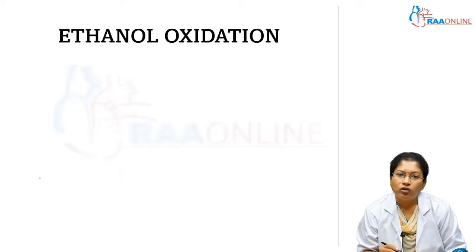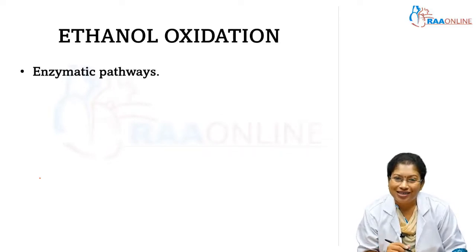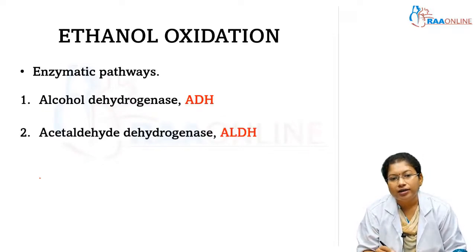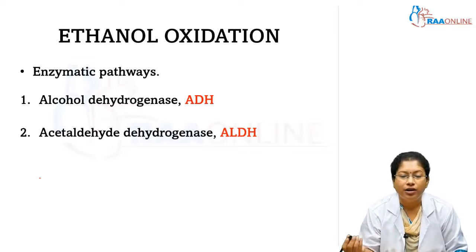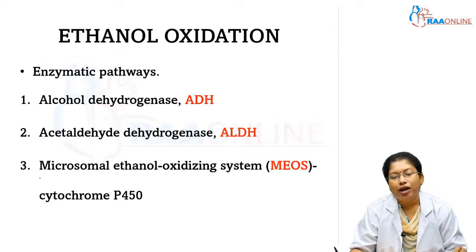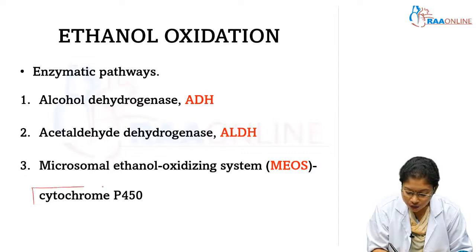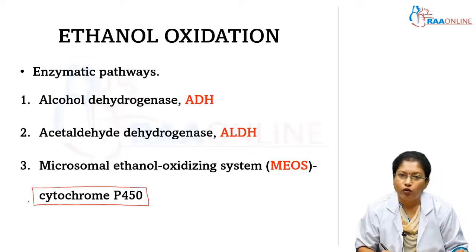Ethanol is oxidized by three enzymes. First is alcohol dehydrogenase. Second is acetaldehyde dehydrogenase, otherwise called aldehyde dehydrogenase. And third is the microsomal ethanol oxidizing system, MEOS, by cytochrome P450 enzyme in the microsomes.